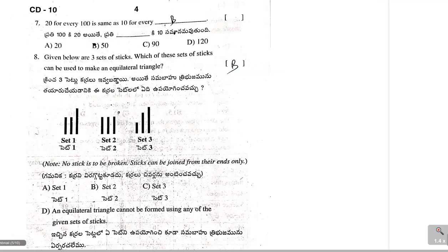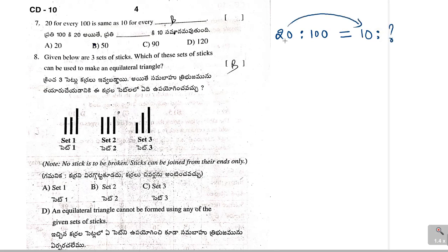Let us go to the next one. 20 for every 100 is same as 10 for every dash. It is like ratio. 20 for every 100, so 20 is to 100, is same as 10 for every, how much is that? Here, if you observe these two, 20 divided by 2 is 10. So, it will be 100 divided by 2. Here 20 divided by 2 is 10. Here also, we can take 100 divided by 2. So, that will be 50. So, answer is 50. Option B is correct.